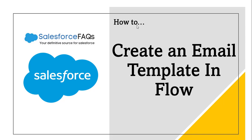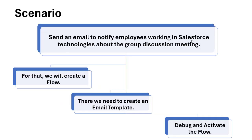Hello everyone and welcome to the channel. In this flow series we will see how to create an email template in Salesforce flow. For that, let's take a scenario: we want to send an email to employees who are working in Salesforce technologies about a group discussion meeting. We will not use any lightning template or classic template — we will create an email template in Salesforce flow. We will create a flow, create the email template in the flow, debug it, and activate it. So without any delay, let's jump to the org.